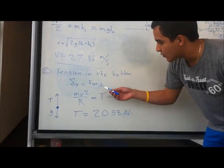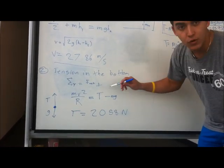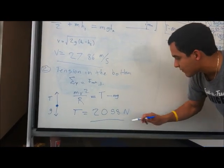Therefore, F net, which equals mv² over r, equals tension minus mg. Solving for T, we get that tension is 2058 newtons.